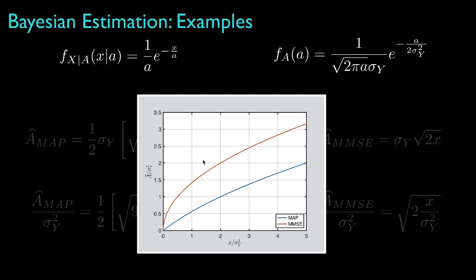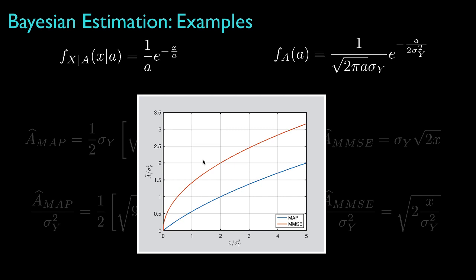These examples demonstrate the basic approach to deriving the MAP and minimum mean square error estimators for the estimation of random parameters. By definition, the MMSE estimator will have a lower mean square error cost, while the MAP estimator will have a lower uniform error cost.